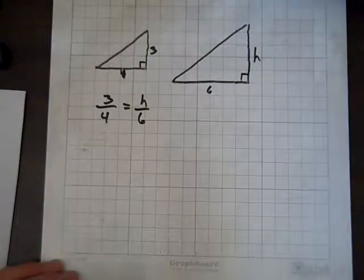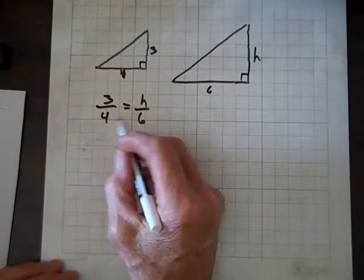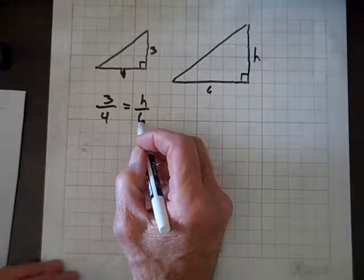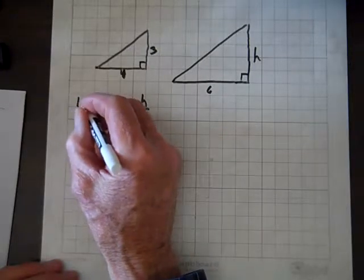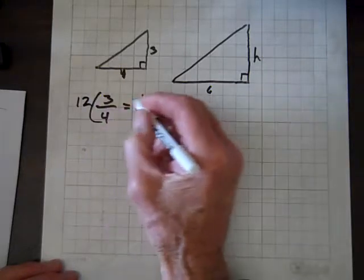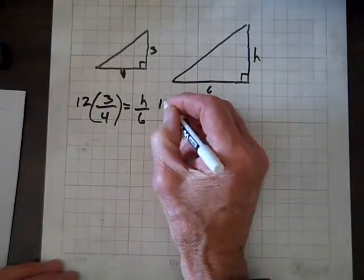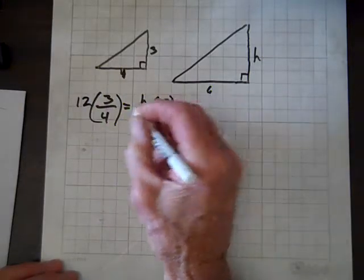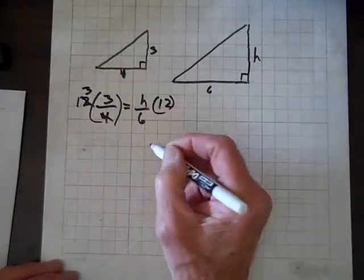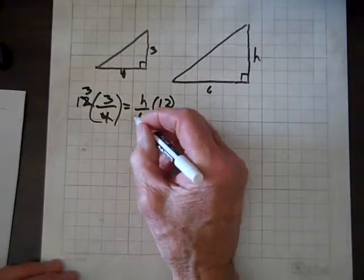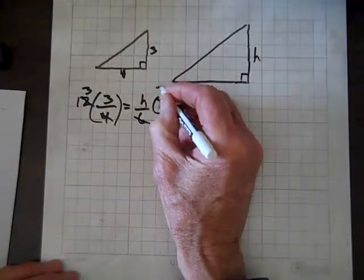So here's the easiest way I know to do this. What's the least common multiple of 4 and 6? Well, it happens to be 12. And so we'll multiply both sides by 12, and 4 goes into 12 three times, and 6 goes into 12 twice.